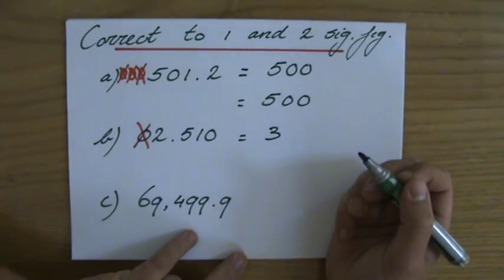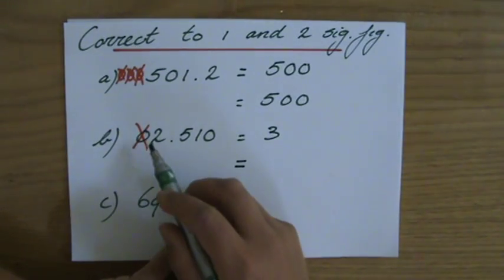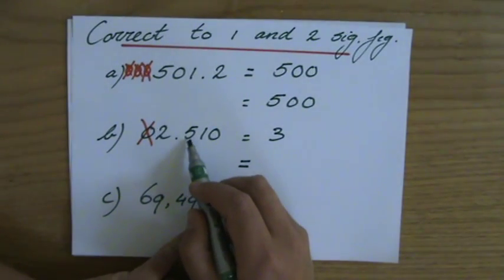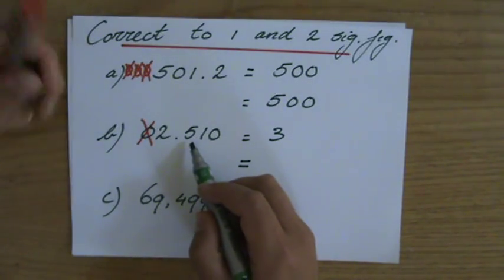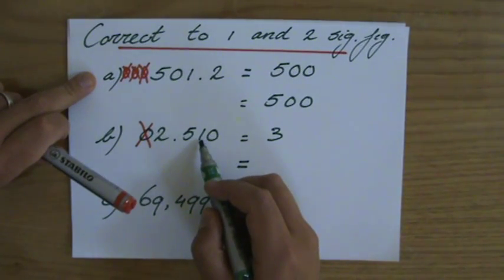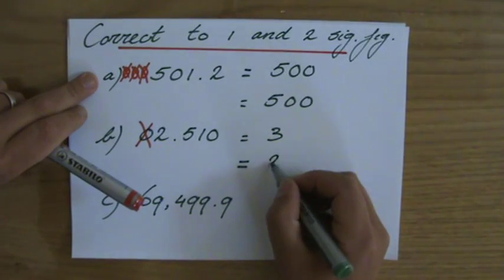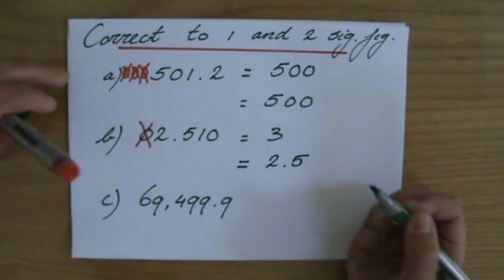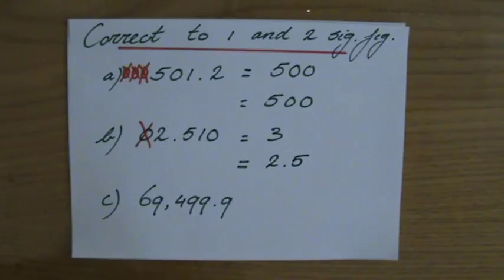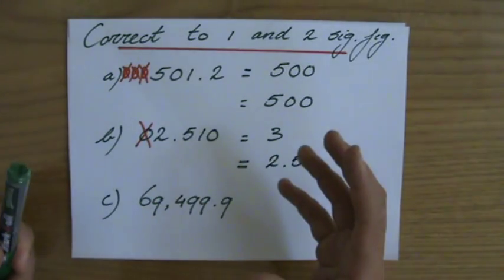So to one significant figure that is going to be three. For two significant figures, my second significant figure either stays a five or goes up to a six, and that depends on the next digit, which is less than five, so it stays. To two significant figures it's going to be 2.5, which is more accurate than three because it has more significant figures.